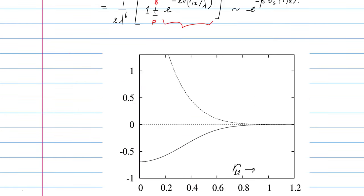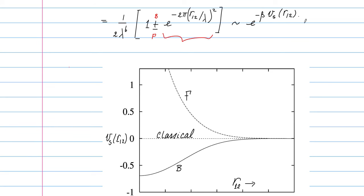This is what the statistical potential looks like. For fermions we have the dashed line, showing that fermions do not want to be together because their statistical potential becomes very high at short range. The classical result is shown as a reference. The lower curve gives the boson result, showing that statistics create a kind of mock attraction between bosons. The statistical potential is defined in terms of rho(r1, r2), the probability of finding two particles, which depends only on the distance r12.